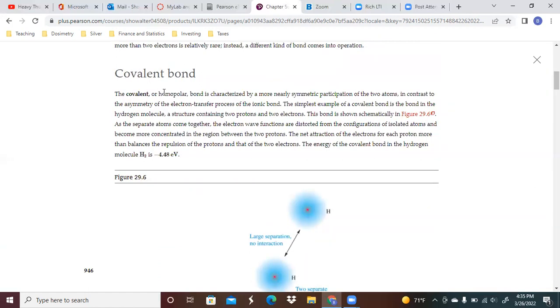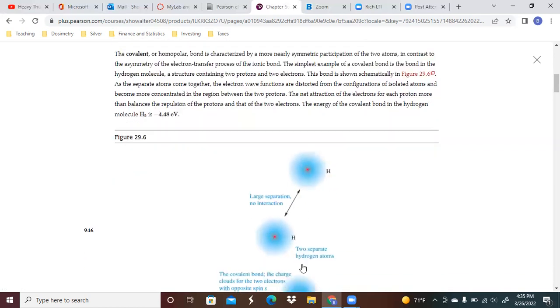The covalent or homopolar bond is characterized by a more nearly symmetric participation of the two atoms. In contrast to the asymmetry of the electron transfer process of the ionic bond, the simplest example of the covalent bond is the bond in the hydrogen molecule, a structure containing two protons and two electrons. This bond is shown schematically here.